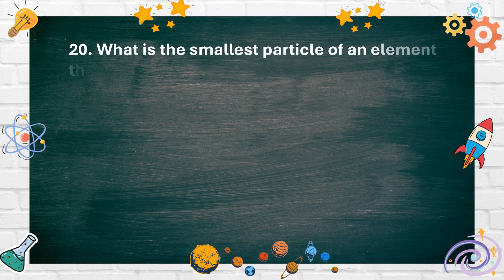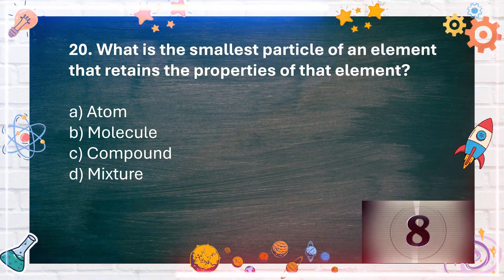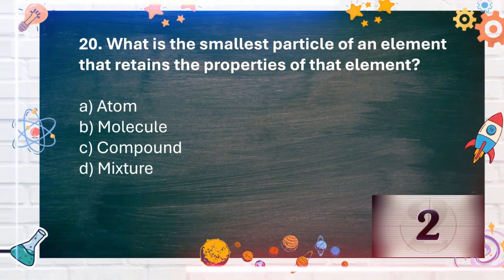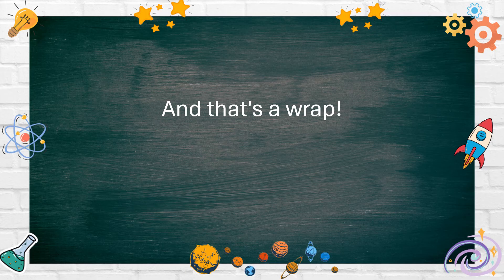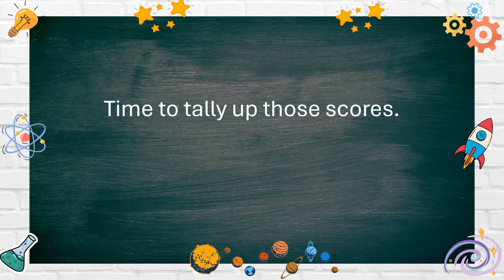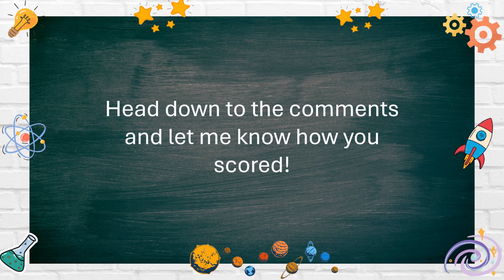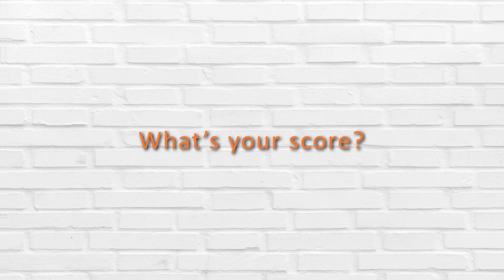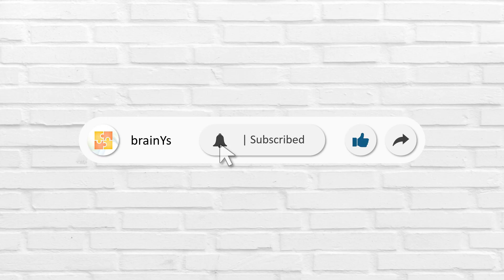Number 20. What is the smallest particle of an element that retains the properties of that element? A. Atom. B. Molecule. C. Compound. D. Mixture. The answer is A. Atom. And that's a wrap! Time to tally up those scores. No matter how you did, I hope you had fun and maybe even learned a thing or two. Head down to the comments and let me know how you scored. What's your score? Comment it below. If you want more of this content, leave a like and share it with your friends. Please subscribe as well, and don't forget to turn on the notification bell. Also check out other videos from BrainWise.